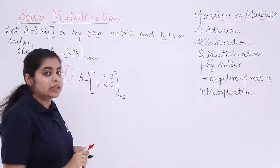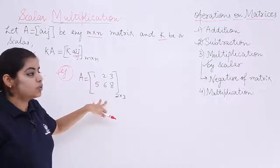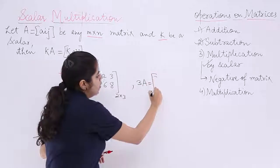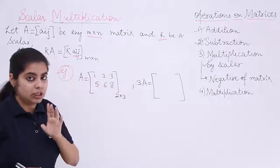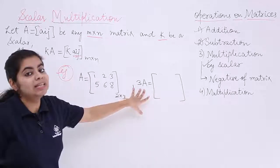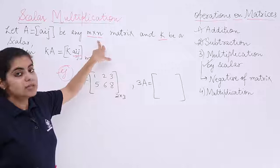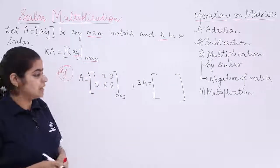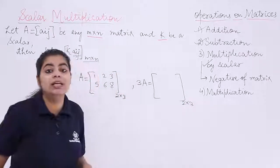Now if given a scalar three and I have to compute three of A. One thing to keep in mind: multiplying by a scalar does not change the order. There was m by n earlier, there is m by n here also. So if it is two by three here, it will remain two by three.